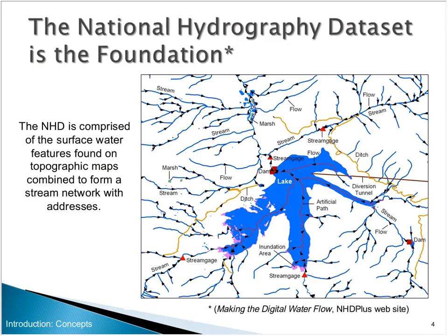In the early 90s, EPA approached the USGS about collaborating on a common stream database, leveraging their existing mapping with the DLG Hydro — Digital Line Graph Hydro was the layer back in those days. The outcome of that collaboration was the first National Hydrography Dataset, 100,000 scale, which provides a stream addressing system, the 50-something hydro features that came off the topographic maps, and the upstream-downstream relationships.